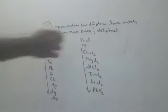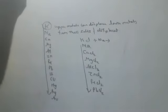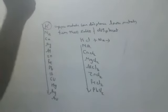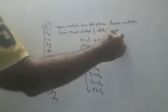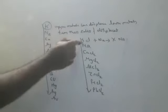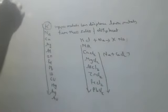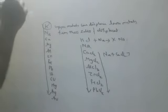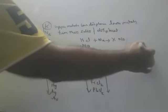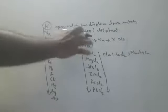Suppose sodium is there. What happens when I put sodium into KCl? It doesn't react — no displacement reaction, no reaction. Because down metals cannot displace upper metals. But sodium can displace all metals below it. If sodium reacts with CaCl2, you get NaCl + Ca, because upper metals can displace lower metals.